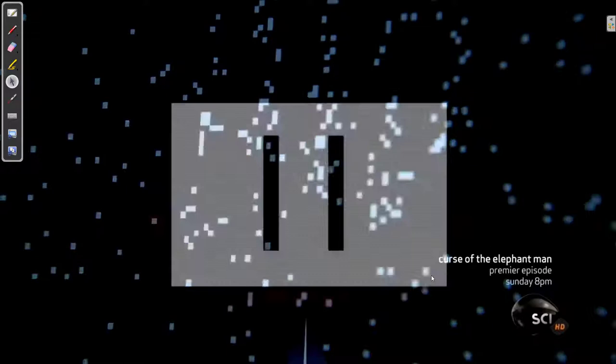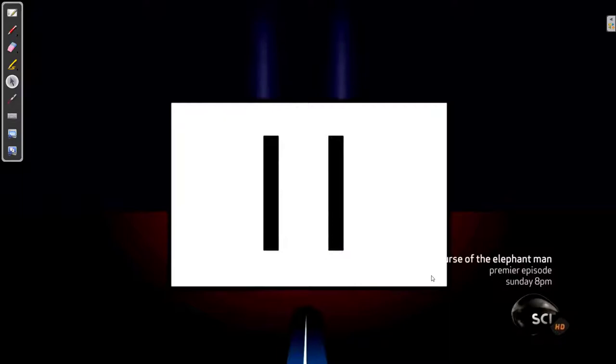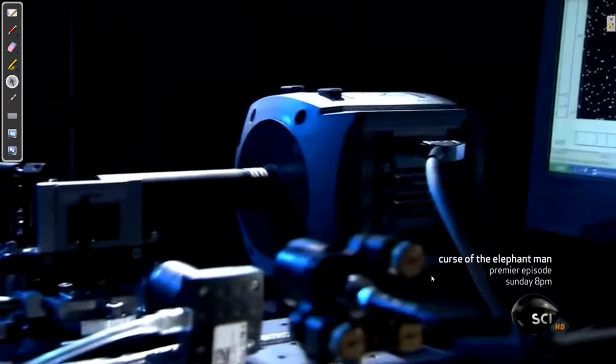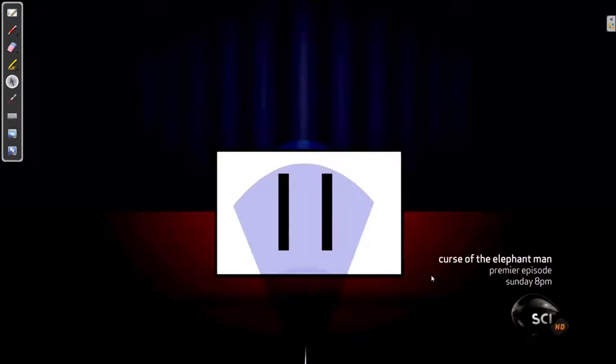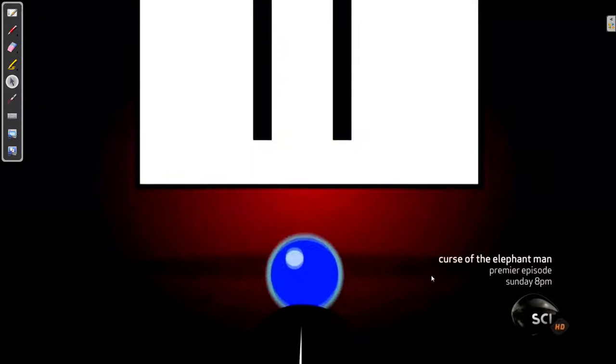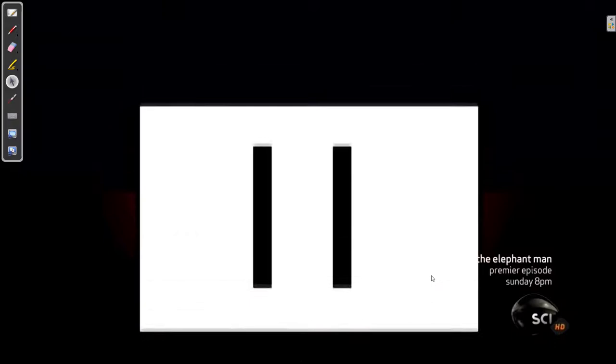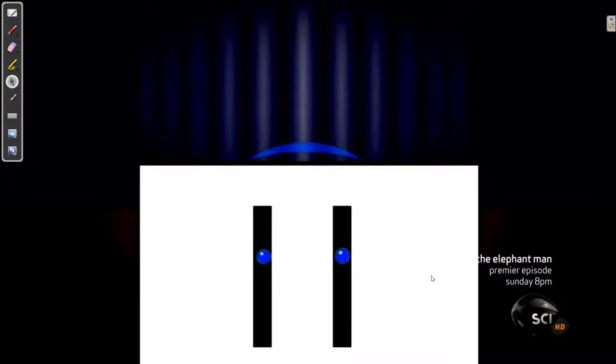Since the photons travel one by one, some through this slit, some through that slit, you would expect them to leave a pattern of two stripes on the wall. And you would be wrong. They mysteriously create a band of stripes. This is what you would expect to see if a constant beam of light shined through the two slits. It would spread across the wall like a wave. So how can single bullet-like particles of light create a wave pattern? This could only happen if the particles go through both slits at the same time. In other words, the particle is in two places at once.